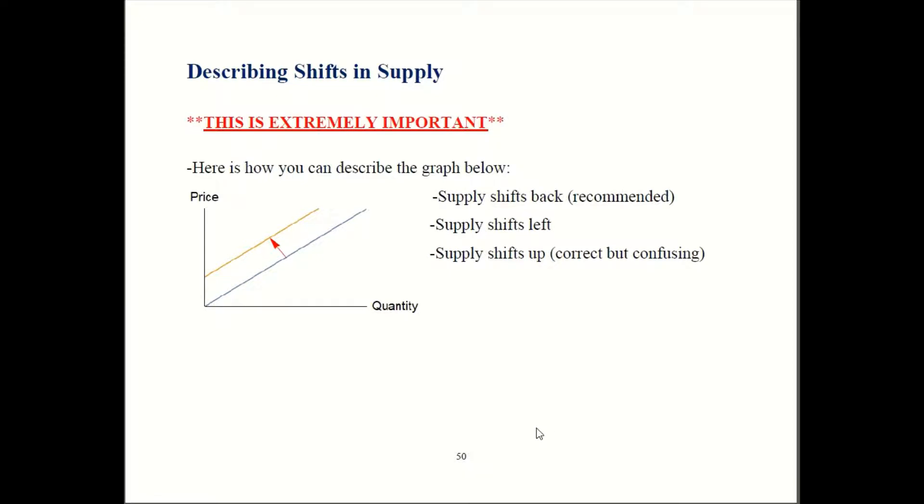So here are some of the vocabulary we use to talk about supply changes. This graph over here, we start out on our blue line and shift to the golden line. You could describe that in any one of three ways. You could say supply shifts back. That's the term that I've been using and I recommend that. Supply shifts left also works. Supply shifts up is true but misleading.